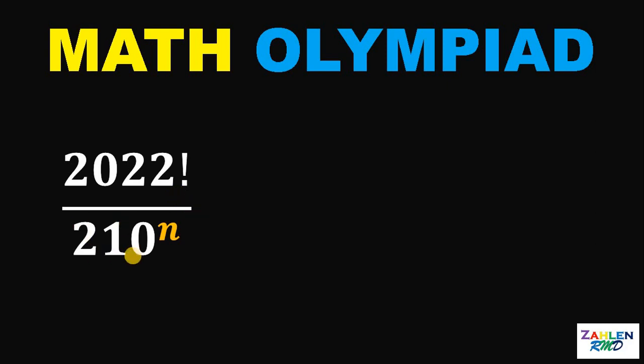Take note that 210, if we factorize 210, is equivalent to 2 times 3 times 5 times 7.